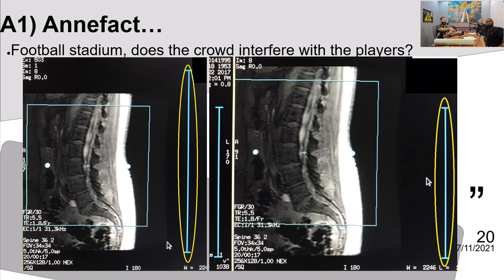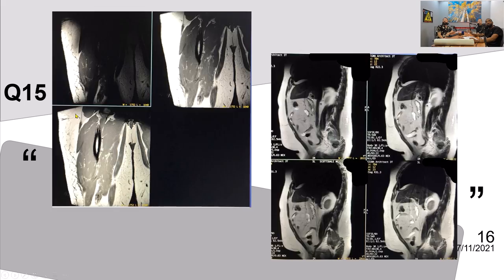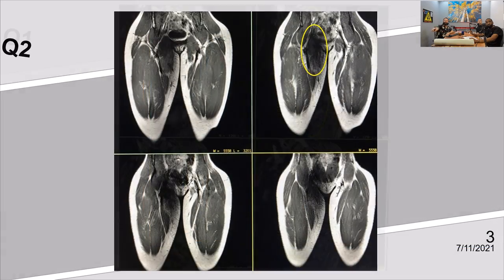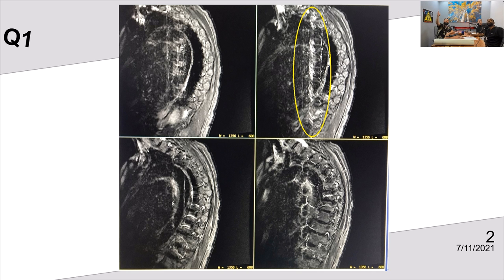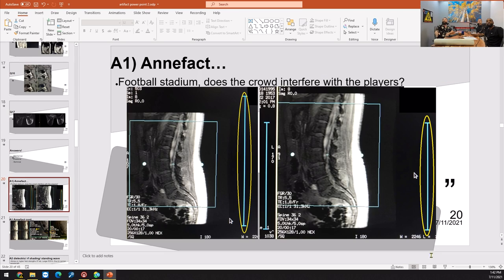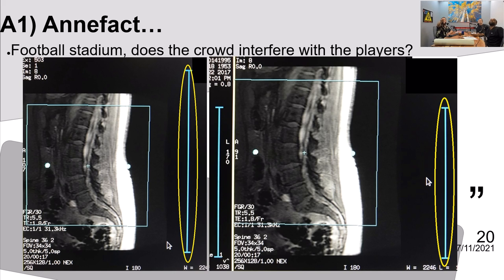Jumping into artifact number one — the T-spine flow artifact. Jonathan shows a before-and-after. The artifact has a feathery appearance and is very common. The question is: what causes it? He uses a football field analogy: your field of view is the playing field, but does the crowd interfere with the players? In MRI, the crowd is signal from outside the FOV.